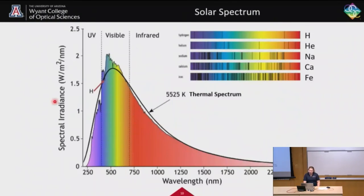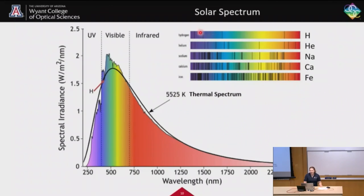Here we have the actual spectrum of the sun. The ideal line shows what we'd get from thermal energy alone with nothing in between, and then we have the real observed solar spectrum. For instance, a small dip in the solar spectrum corresponds to the hydrogen absorption line. Any dips are from absorption and any peaks are from emission.